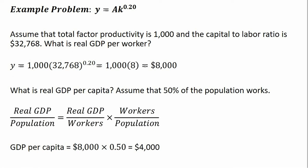So plugging in what we know, we know that real GDP per worker is $8,000. We got that in this top step. And we're told that 50% of the population works. So the number of workers divided by the population is 50% or 0.5. So we get GDP per capita of $4,000.